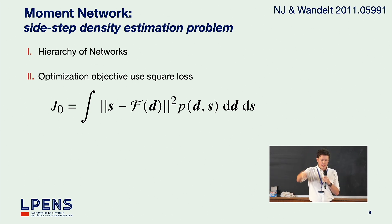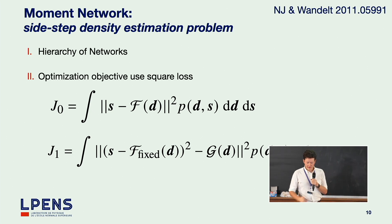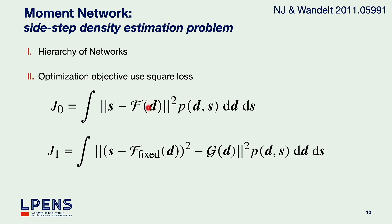Then we do another layer — the next hierarchy of the moment network with a G network. We plug our first network into the first part of our squared loss. If we train this again over the joint distribution of data and parameters, then our second network G, once trained, will give an estimate of the posterior variance as well. So we're able to do likelihood-free inference in extremely high dimensions using this hierarchy of networks.